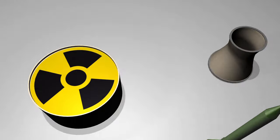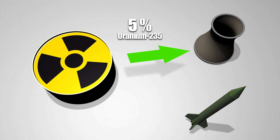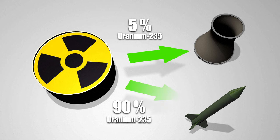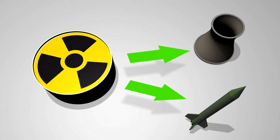To generate power, Uranium is enriched only to 5%. To make a nuclear bomb, it must be enriched to at least 90%. Plutonium-239 is a second option.